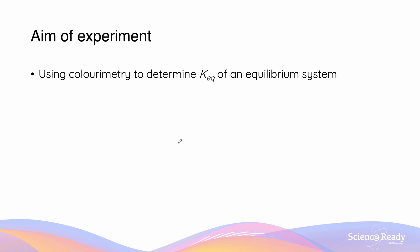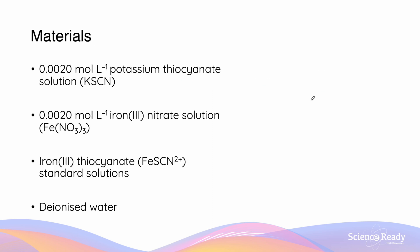Onto conducting the experiment. The aim of our experiment is going to be to use a colorimeter to determine the Keq of an equilibrium system, and we are now going to go through how that is done. So let's do an example experiment for calculating Keq.